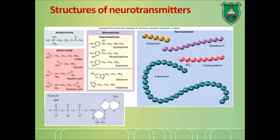These are the different neurotransmitters and how their structures look. The small molecule neurotransmitters are small compared to neuropeptides, which can have diverse structures in terms of number and type of amino acids. We also have ATP shown here.